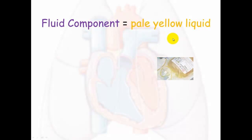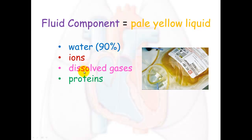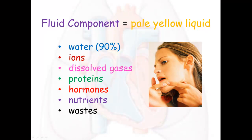Plasma is the fluid component, or the pale yellow liquid of blood, and you'll see it in hospitals in bags. It's made up of water — about 90 percent — but also ions, dissolved gases, proteins, hormones, nutrients, and waste. It's the fluid component that everything else gets dissolved in. When you squeeze a pimple too much and you see a yellowy, watery liquid come out — that is plasma.